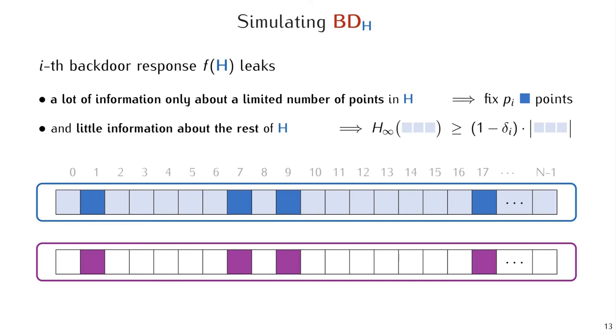This property is referred to as 1 minus delta_I density of a distribution. And this is important that we don't just assume that these points are uniformly random instead of 1 minus delta_I dense, since future backdoor queries can potentially see the entire hash function and would notice a change.